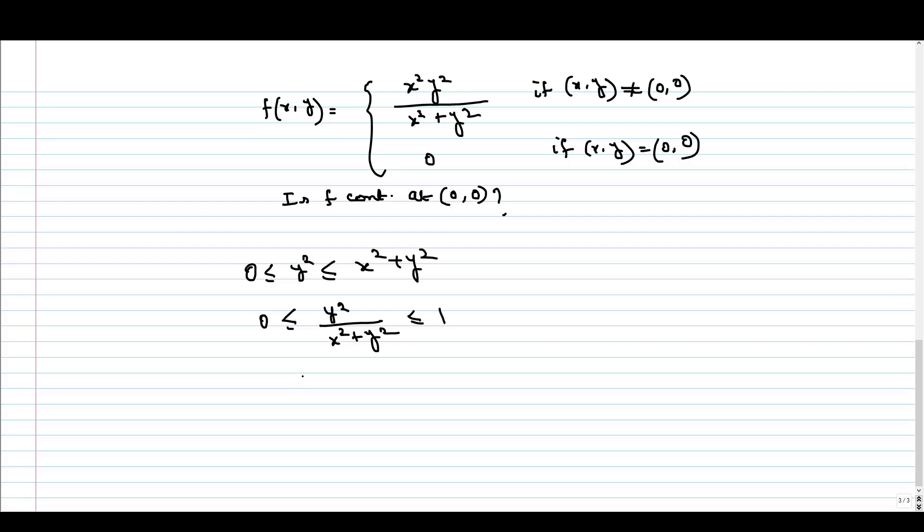If I multiply it with x², now x² is positive, so we will get x² y²/(x² + y²) ≤ x². This x² is basically greater than or equal to 0, so it is non-negative. So I can write this inequality—sorry, this will be x², 1 times x², so this will be x².